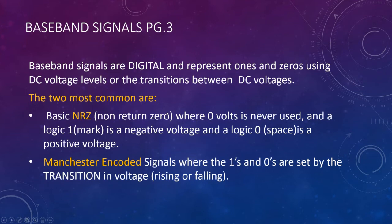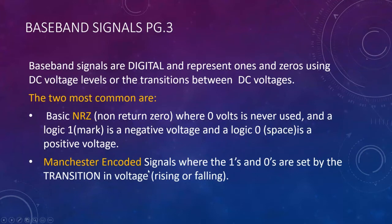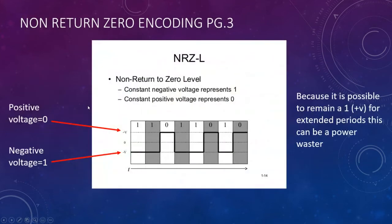NRZ has some issues we'll come back to. Manchester encoded signals set ones and zeros by the transition in voltage — either rising from low to high or falling from high to low. Think of it like a pressure switch: a high pressure switch trips on a rising signal, a low pressure switch on a falling signal. Same idea, but in a digital application.